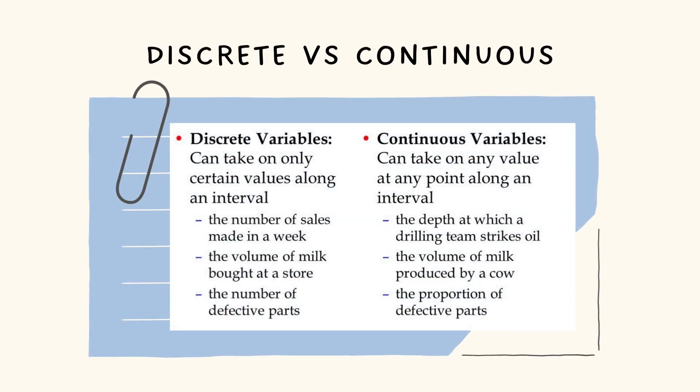For discrete versus continuous, discrete variables can take only certain values along an interval. The number of sales made in a week, the volume of milk bought at the store, the number of defective parts, etc. For continuous variables, it can take any value at any point along an interval. Like the depth at which a drilling rig strikes oil, the volume of milk produced by a cow, and the proportion of defective parts.